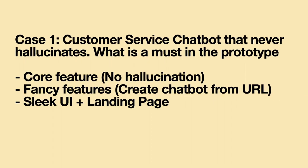So the first question — I was working on a generative AI chatbot solution. Our claim was that using our solution you can create a customer service chatbot that does not hallucinate. The problem is that ChatGPT, no matter what question you ask, comes up with some made-up answer. If you use it for customer service and someone asks 'do you have a discount?', ChatGPT will say yes, and that causes a whole set of problems. So when thinking about this prototype — how many of you think the core feature, that is no hallucination, must be in the prototype?